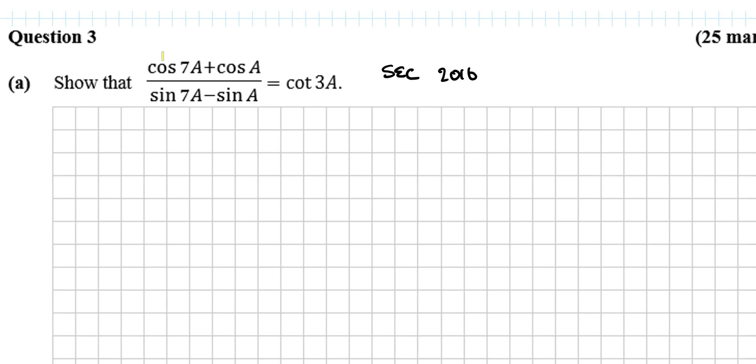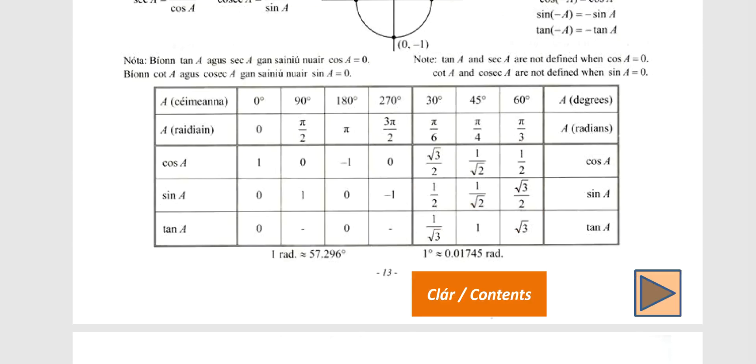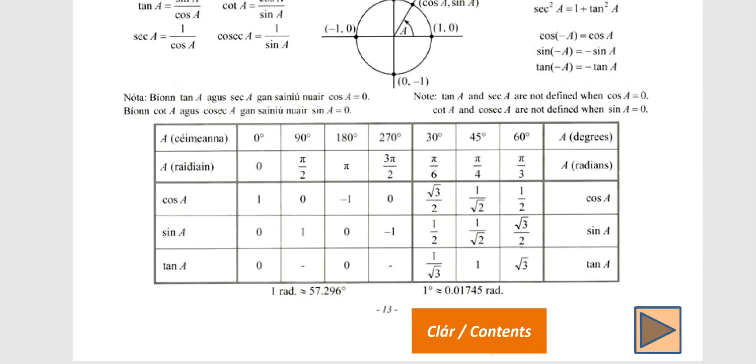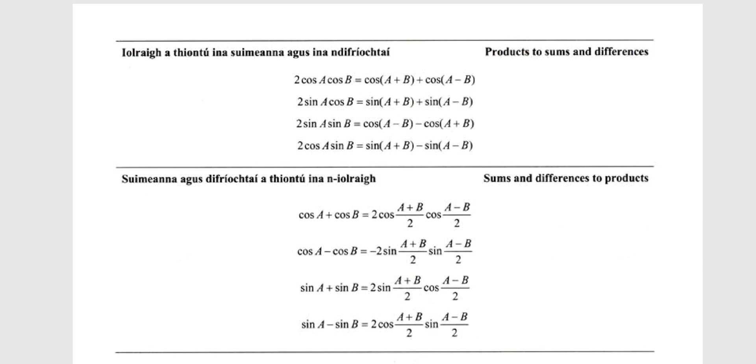Okay, so first thing that should really be jumping out at you is this kind of looks like cos a plus cos b. So you go to your log tables and go to trigonometry and where are we looking for cos a plus cos b? Here's cos a plus cos b.